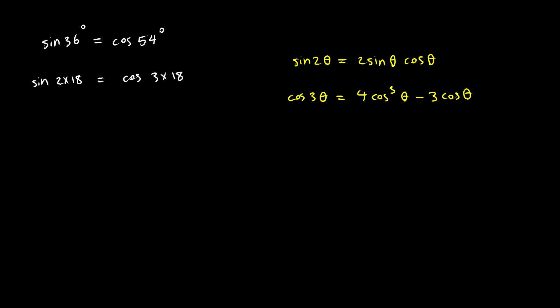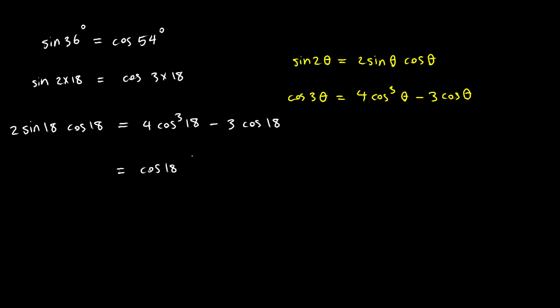Let's go ahead and apply these two formulas. On the left hand side, I will have 2 times sine of 18 times cosine of 18. On the right hand side, I will have 4 times cosine cubed of 18 minus 3 times cosine of 18. Notice that on the right hand side, I can pull out cosine of 18, giving cosine of 18 times the quantity 4 times cosine squared of 18 minus 3.